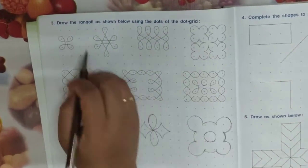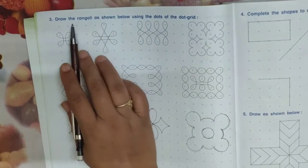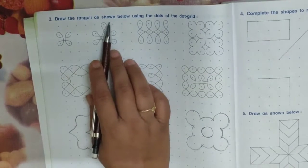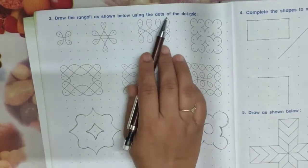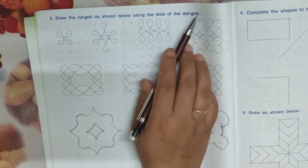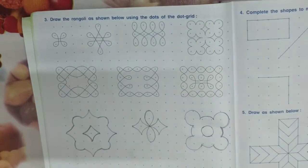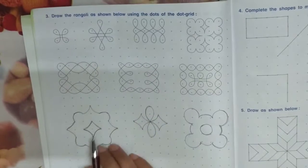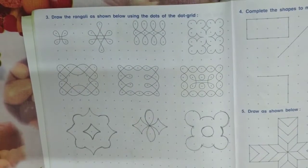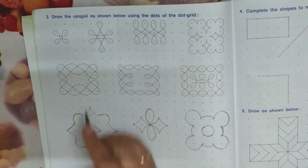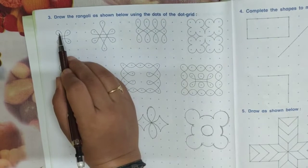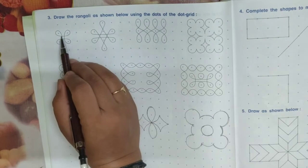Now see question number 3: draw the rangoli as shown below using the dots of the dot grid. Here rangoli is given by using the dots we have drawn. They don't touch the dot but use the dot.